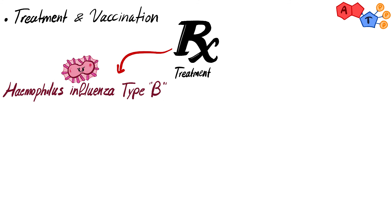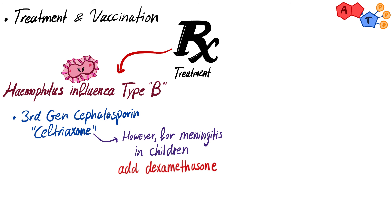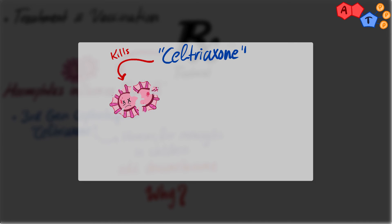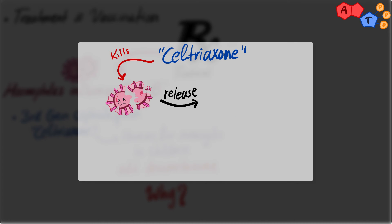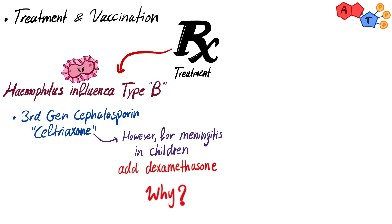For treatment of H. influenzae type B infection, we use third-generation cephalosporins such as ceftriaxone. However, in cases of meningitis in children, we also give a corticosteroid such as dexamethasone in addition to ceftriaxone. Why? When ceftriaxone kills the bacteria, the death of H. influenzae causes release of lipopolysaccharide antigens — since it is gram-negative — resulting in a strong immune response that destroys neurons along with the bacteria, potentially causing neurological damage. Therefore, dexamethasone is given to decrease the immune response caused by LPS release, reducing collateral damage to neurons.